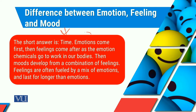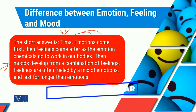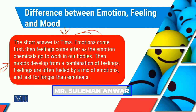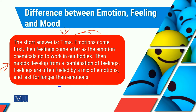For example, when we talk about emotions, emotions come first. Then our feelings develop — a feeling comes afterwards as the emotion chemicals go to work in our bodies. Then mood would evolve and be developed from a combination of feelings. Feelings are often fueled by a mix of emotions and last for longer than emotions. So these three things are associated and linked, and all three are based upon the time frame.